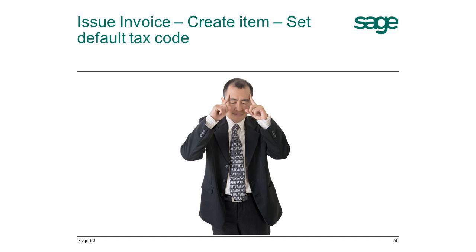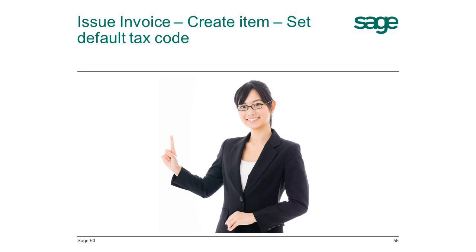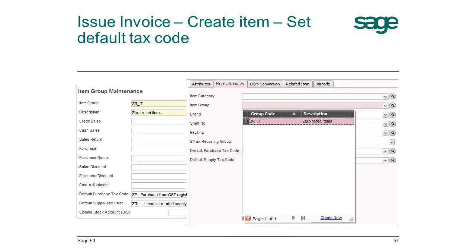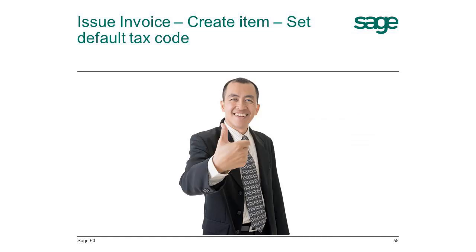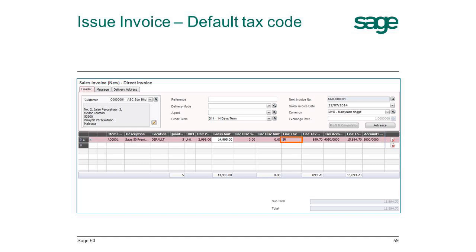If you have hundreds of items, there is an easier way in Sage 50 — categorize your items by item group. You can set the default GST tax codes at the item group level and link your items to their respective group. In the future, if there is any change of GST tax code, you just need to change it at the item group and all respective items will follow. After maintaining the item details, click Save. The item will be populated in the Invoice Entry screen, and you'll notice that the GST tax code is automatically filled in as well.